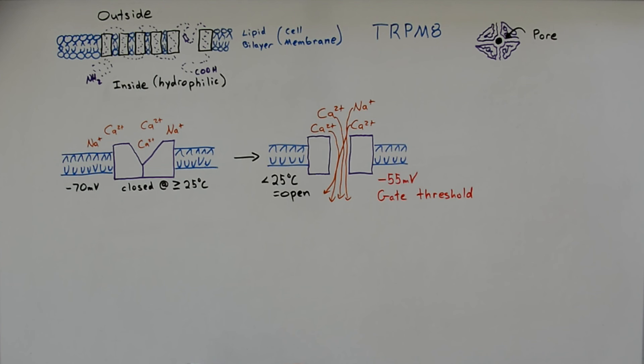If enough cations flow in from all the various TRPM8 tetramers, eventually minus 55 millivolts is reached on the inside of the cellular membrane. This is called a gate threshold because when it's reached, all the voltage-gated channels in the cellular membrane are then triggered, and they open up propagating an action potential that travels up the axon of the neuron.